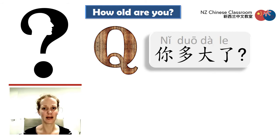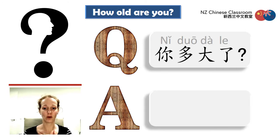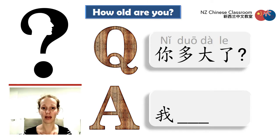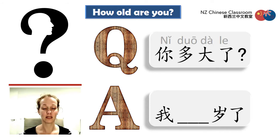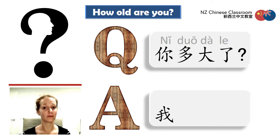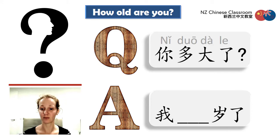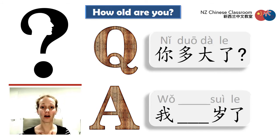So how do we answer? We will say 我, then we add in our age, and then 岁, and put on the 了. 岁 means 'years old.' So the pattern is: 我 [number] 岁了. For example: 我27岁了.